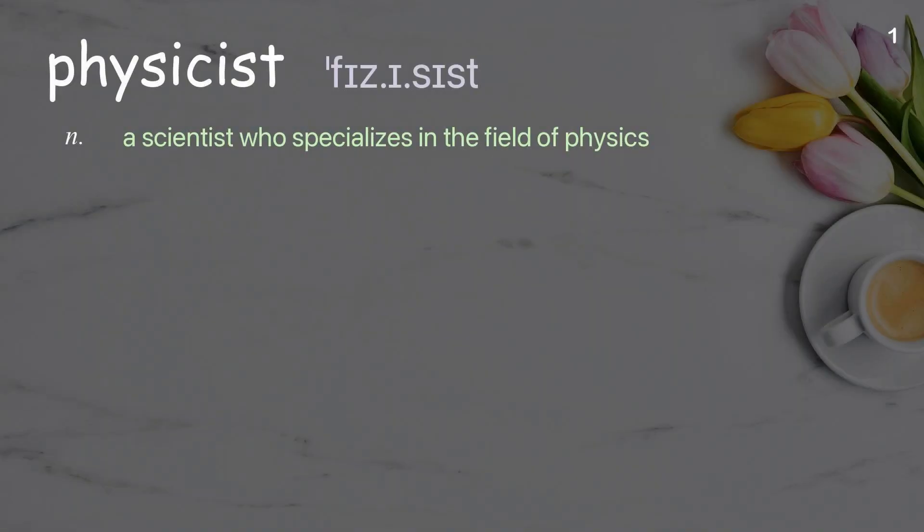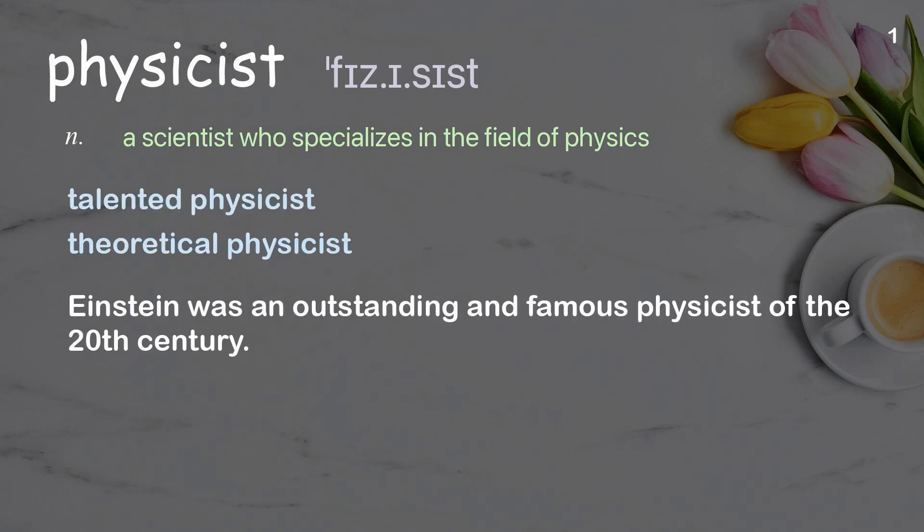Physicist. A scientist who specializes in the field of physics. Examples: talented physicist, theoretical physicist. Einstein was an outstanding and famous physicist of the 20th century.